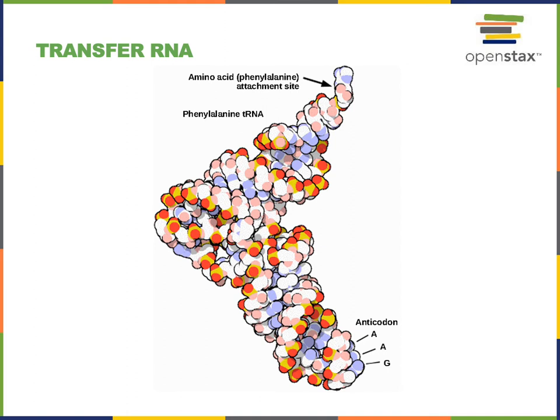Complementary base pairing will stabilize the association of the tRNA with the mRNA, and the amino acid will be held into the ribosome, enabling the ribosome to catalyze the formation of a peptide bond attaching the amino acid from the tRNA onto the free end of the growing polypeptide.